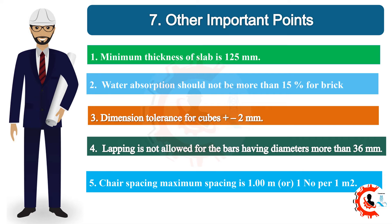Seven: other important points. 1. Minimum thickness of slab is 125 mm. 2. Water absorption should not be more than 15% for brick. 3. Dimension tolerance for cubes is ±2 mm. 4. Lapping is not allowed for bars having diameters more than 36 mm. 5. Chair spacing maximum is 1.00 meter, or 1 number per 1 square meter.